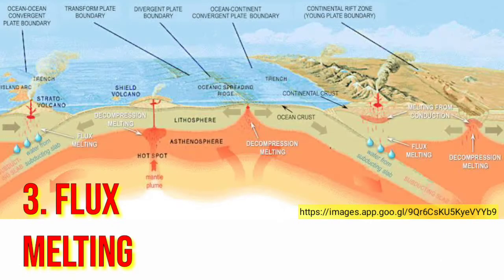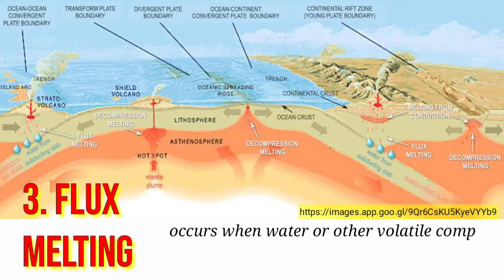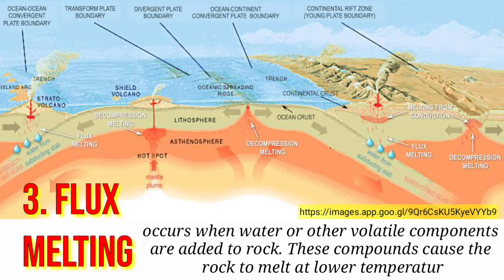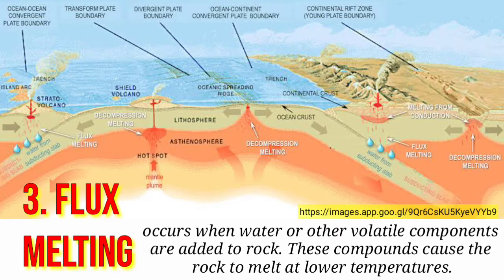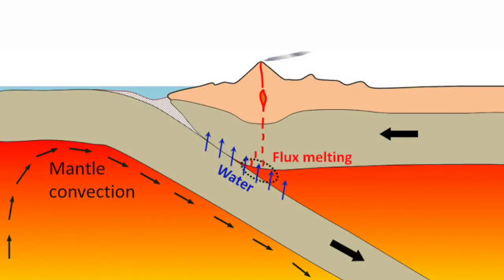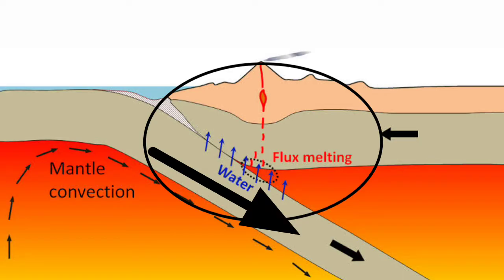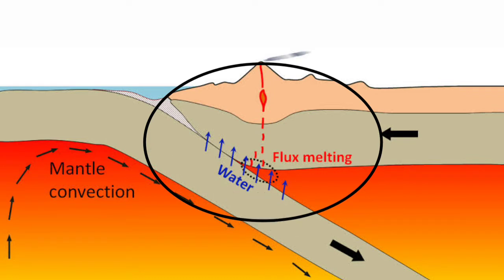Next is flux melting. This occurs when water or other volatile components are added to rock. These compounds cause the rock to melt at lower temperatures. This creates magma in places where it originally maintained a solid structure. Much like heat transfer, flux melting also occurs around the subduction zone. In this case, water overlying the subducting seafloor would lower the melting temperature of the mantle, generating magma that rises to the surface.